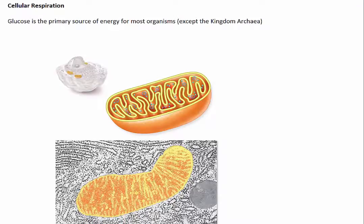All organisms, with the exception of the kingdom Archaea, use glucose as the primary source of energy to drive the thousands of chemical reactions that occur constantly in each living cell. In each living cell, the chemical bonds of glucose are broken, providing energy that the cell can use. And this chemical process is known as cellular respiration.